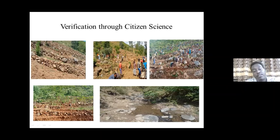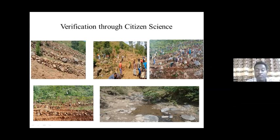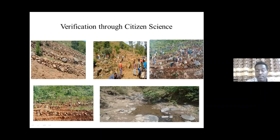We also verified this through citizen science. Field photos show communities working on soil and water conservation activities on the slopes. Comparing photos of the same location taken about five to six years apart shows that by around 2020 the area was covered by vegetation. This increase in vegetation also indirectly indicates increasing groundwater recharge and higher infiltration rates. A previously dry stream that had no perennial flow before watershed management later started re-emerging with flow — a positive impact of watershed management.